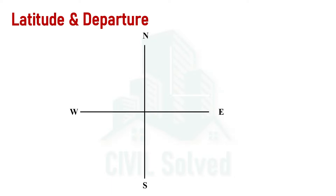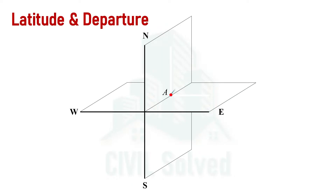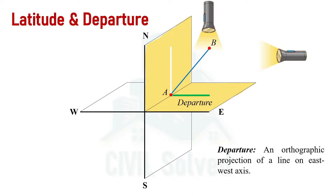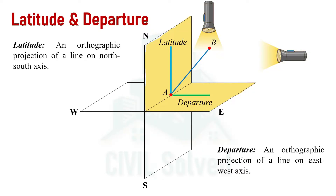Now let's discuss the latitude and departure of a line. We know the standard directions: north, east, west, south. In the north-east quadrant, if we have a line AB inclined at a certain angle, and we apply light from the side, a projection will be formed on the north-south axis. Similarly, if we apply light from the top, a projection will be formed on the east-west axis. The projection formed on the east-west axis is called departure, which is defined as the orthographic projection of a line on the east-west axis.